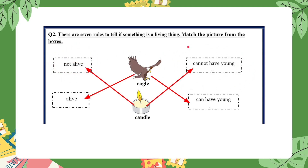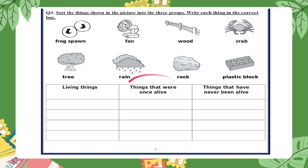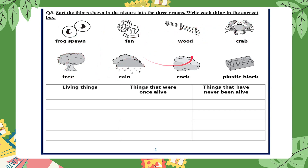In question three, we are going to sort the things shown in the picture into three groups — write each thing in the correct box. Living things can do the seven rules. Things that were once alive means something that was alive but is not alive now. Things that have never been alive are things that cannot do the seven rules. The items are: frog spawn, fan, wood, crab, tree, rain, rock, and plastic block.